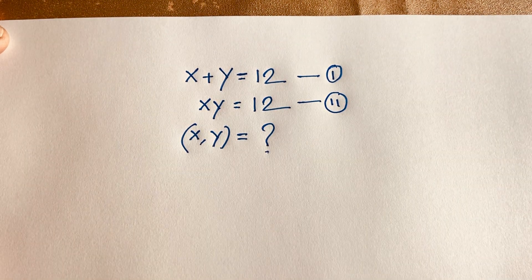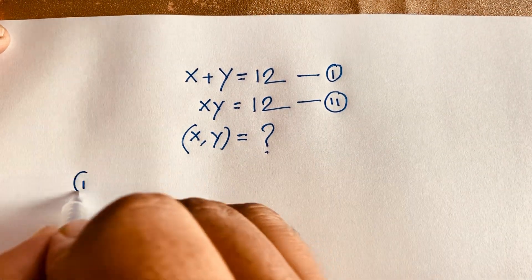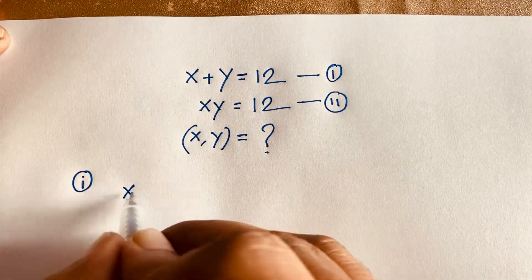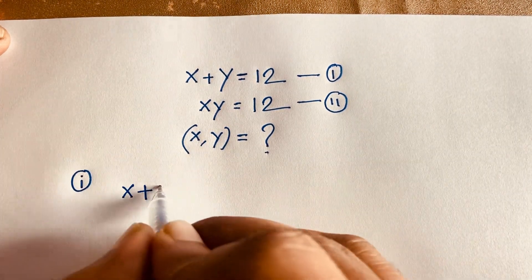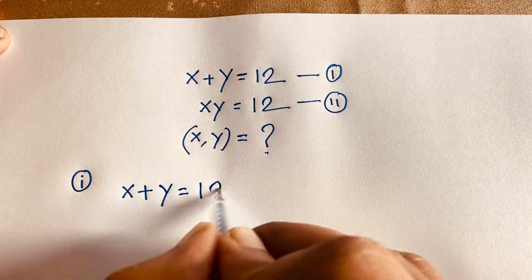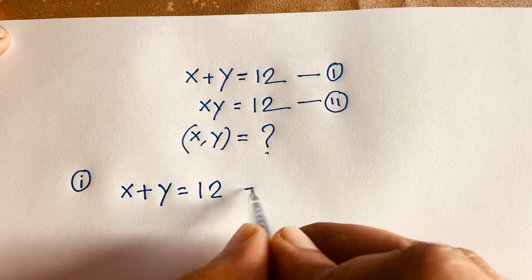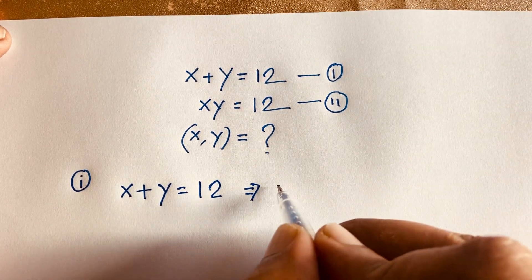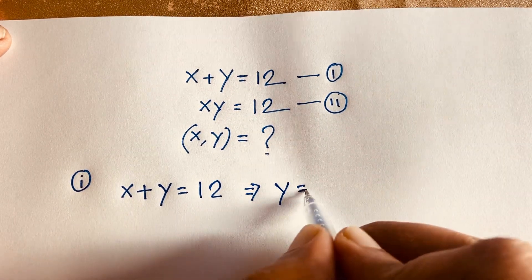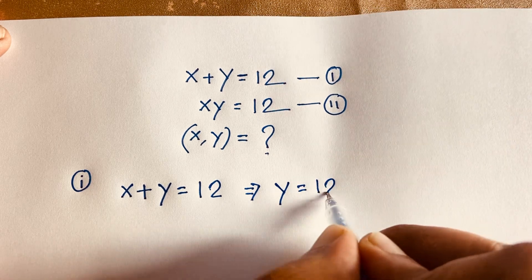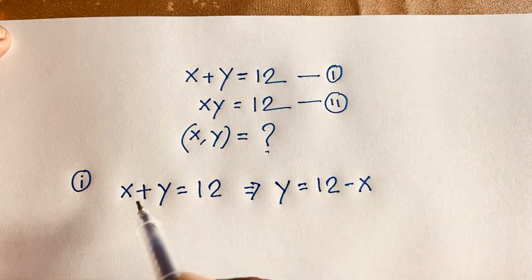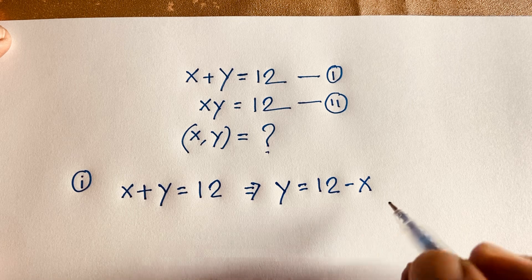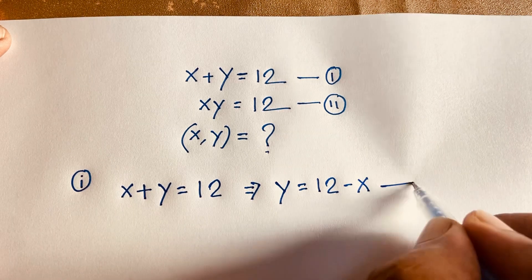According to the first equation, we have x plus y is equal to 12. We can see easily that y is equal to 12 minus x — I just move this x to this side, so it becomes negative x. So this is our third equation.